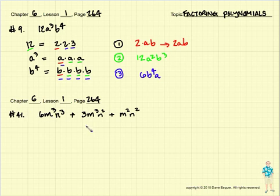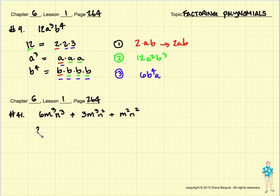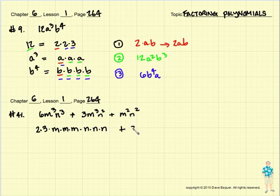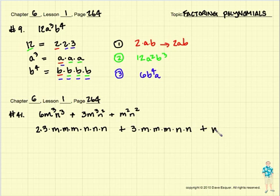Let's try number 41 on page 264. A little bit more complicated, but again, all we're going to do is write these out and see what we can come up with. We want to see what is common when we're factoring — what's common with all of these. So in the beginning, it might be easiest just to write this out as 2 times 3 times m times m times m times m times m times n times n. And then m times m times n times n.